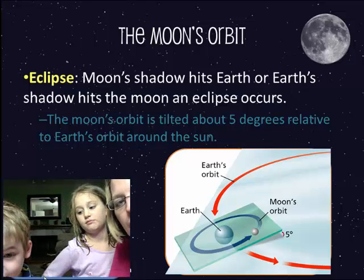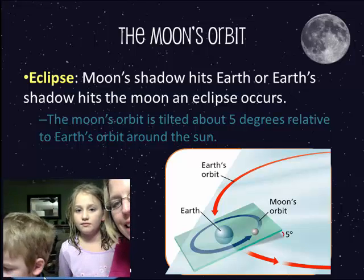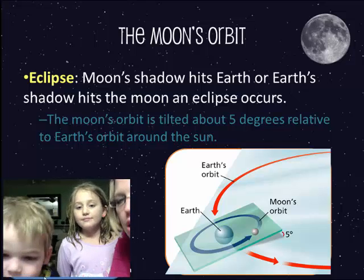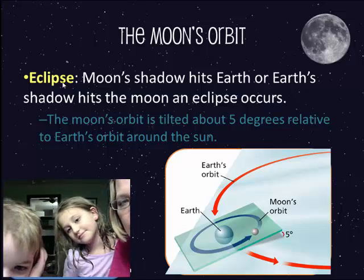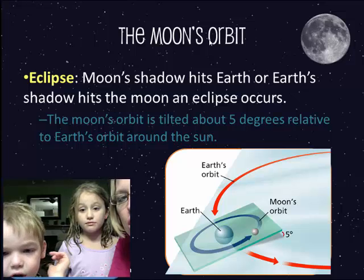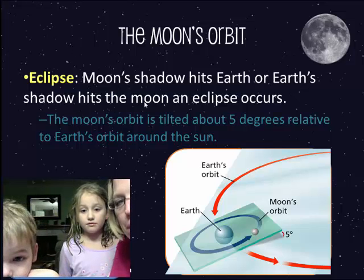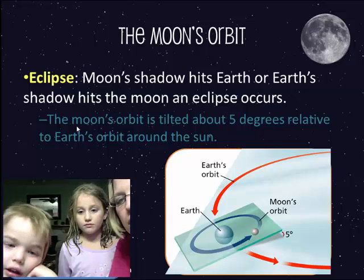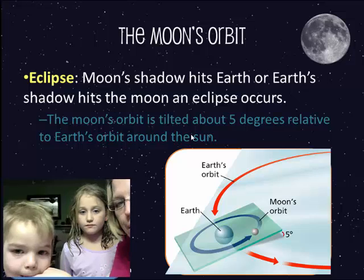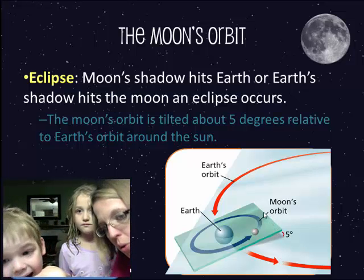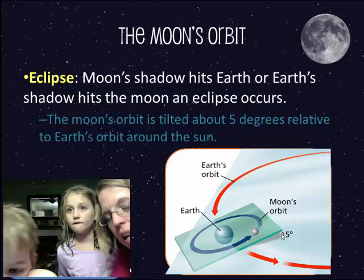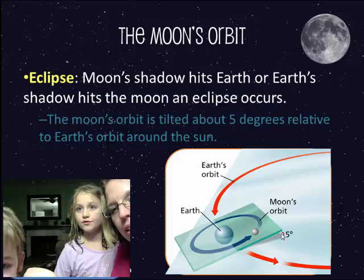This next section is in the proficient area, so we expect all of you to understand eclipses. An eclipse means the moon's shadow hits the earth, or the earth's shadow hits the moon. We would have an eclipse every month, except the moon's orbit is tilted five teeny tiny degrees, and that tilt prevents an eclipse from happening every single month.